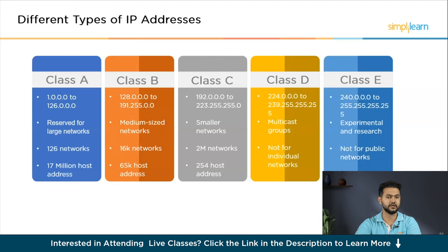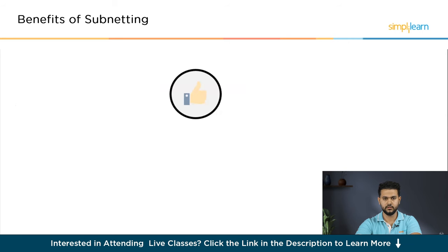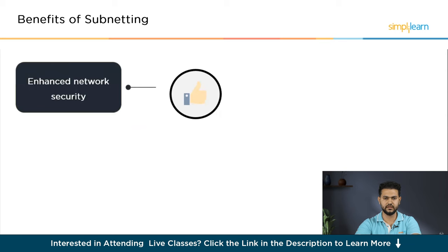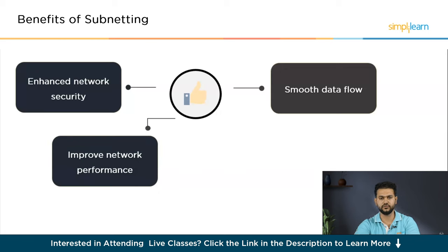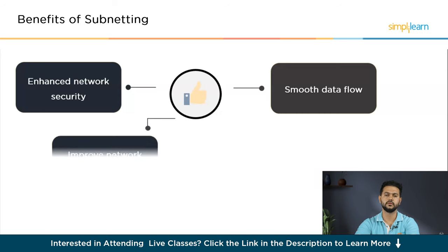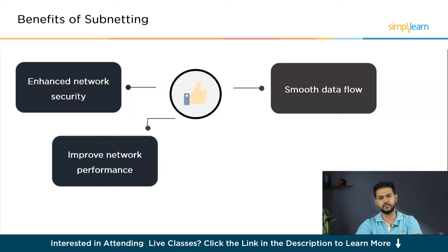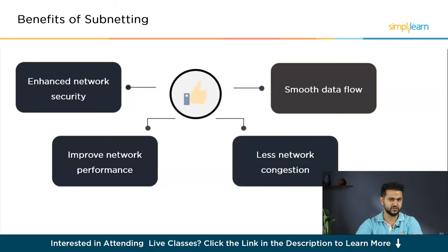Now let's understand the benefits of subnet masks. First is enhanced security — it bolsters defense mechanisms to protect against potential threats, ensuring the safety of data and communications. Second is smooth data flow — it promotes smoother data flow, preventing slowdowns and interruptions for a more efficient network. Third is improved network performance — it enhances the speed and reliability of connections, optimizing the overall user experience. Fourth is less network congestion — it streamlines the network, minimizing delays and improving overall productivity.